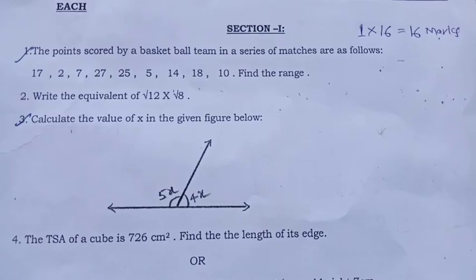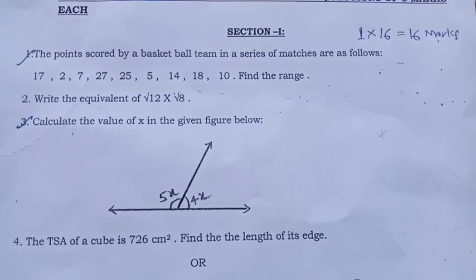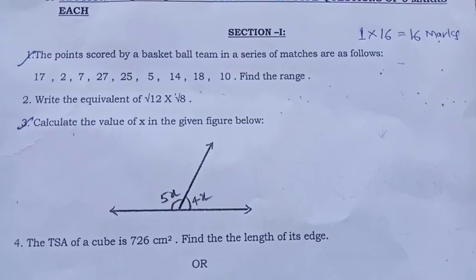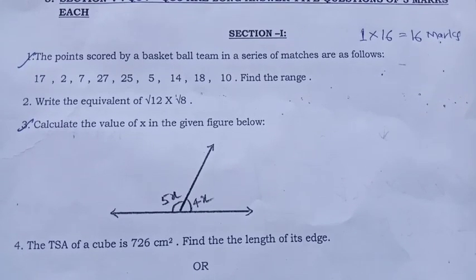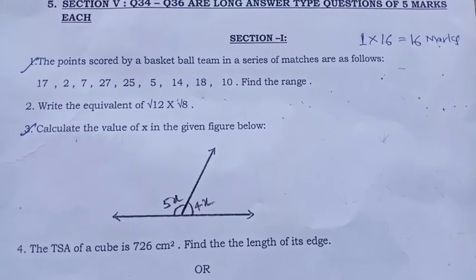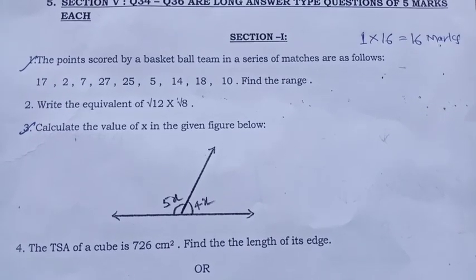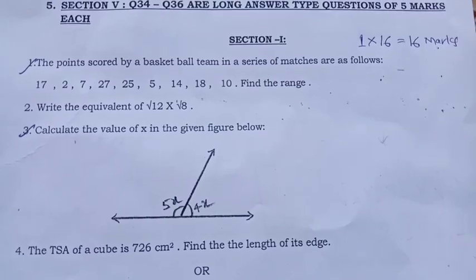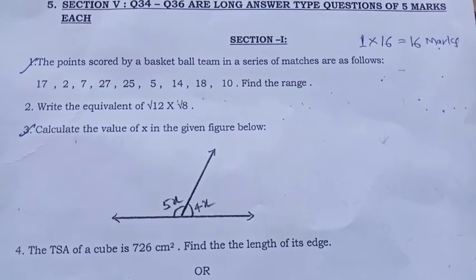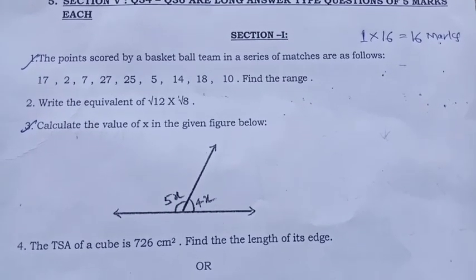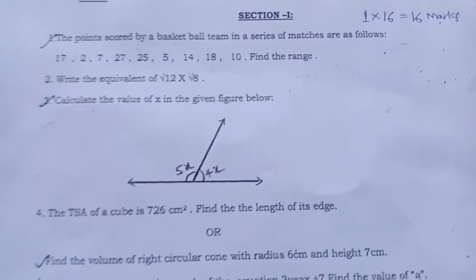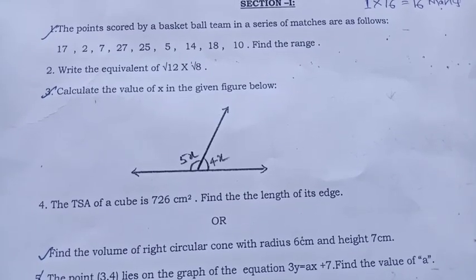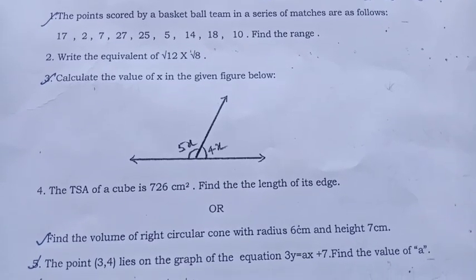First question, the points scored by a basketball team in a series of matches are as follows: 17, 2, 7, 27, 25, 5, 14, 18, 10. Find the range. Write the equivalent of square root 12 into square root 8. Calculate the value of X in the given figure below. See the figure. The TSA of a cube is 726 cm square. Find the length of its edge.